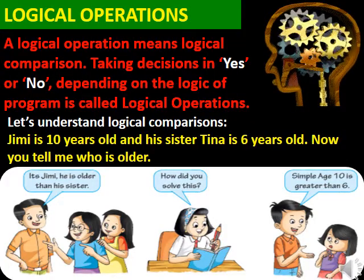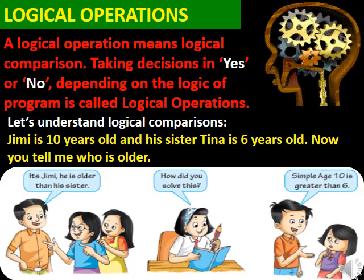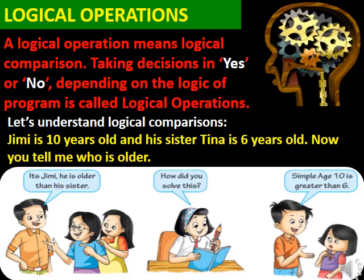What are logical operations? A logical operation means logical comparison. Taking a decision in yes or no depending on the logic of the program is called a logical operation. For example, Jimmy is 10 years old and his sister Tina is 6 years old. Who is older? It's Jimmy — he is older than his sister because age 10 is greater than 6.